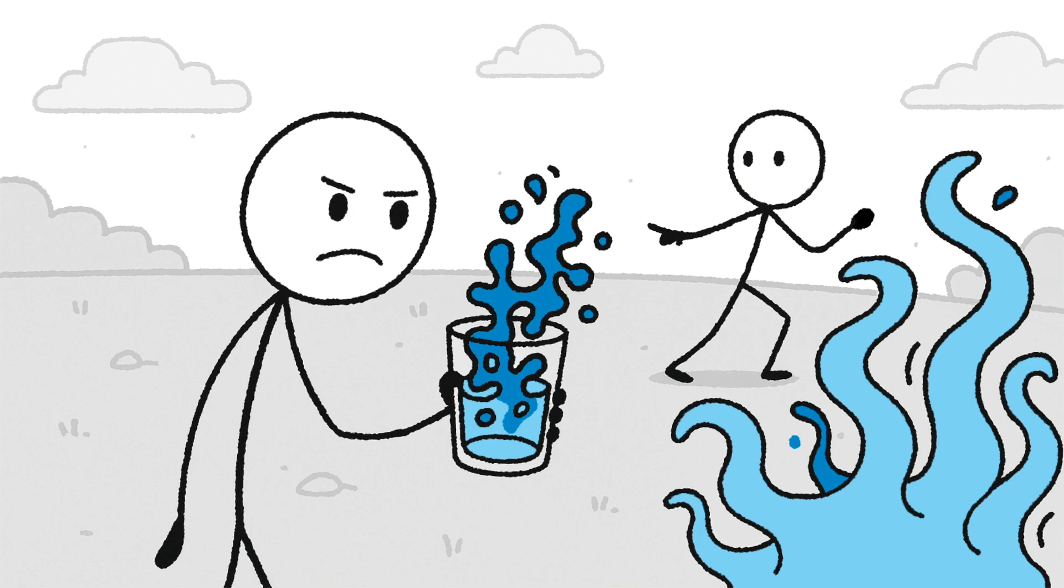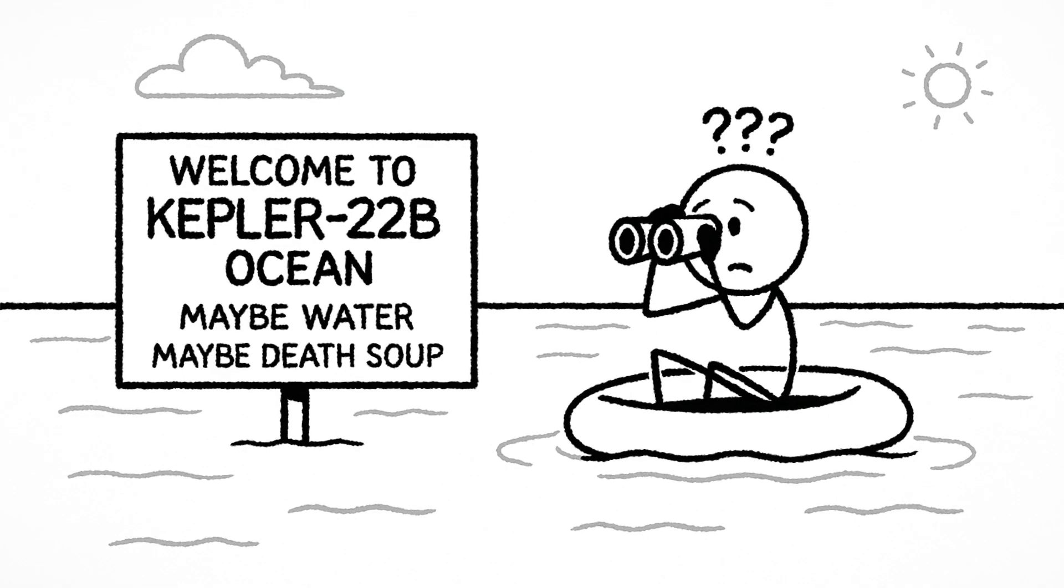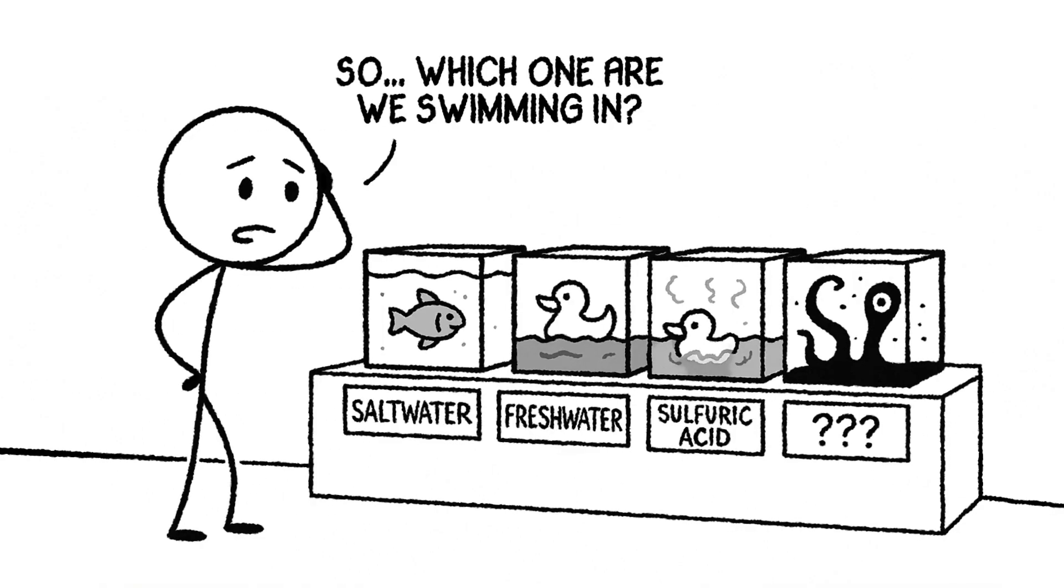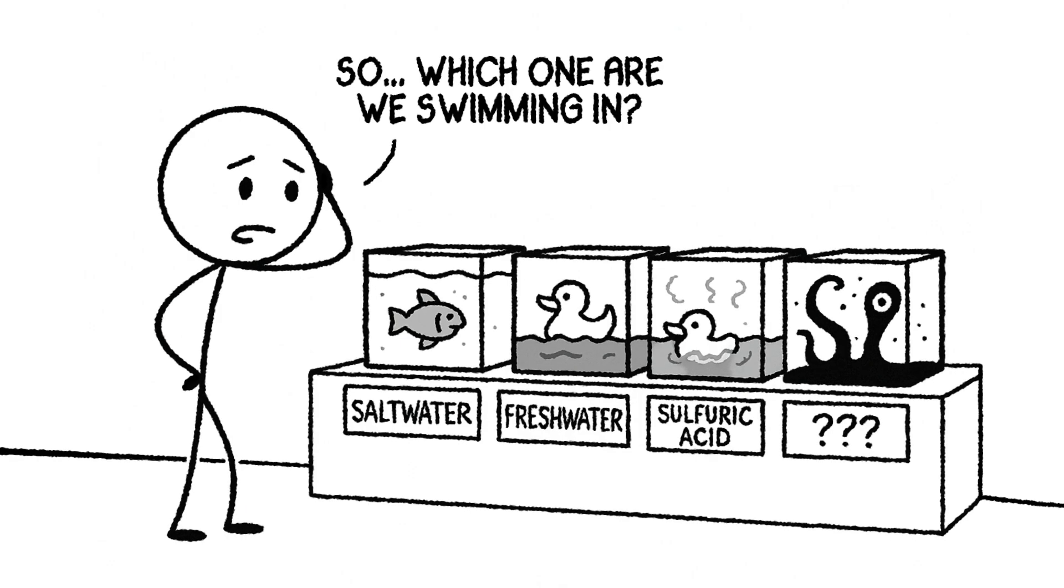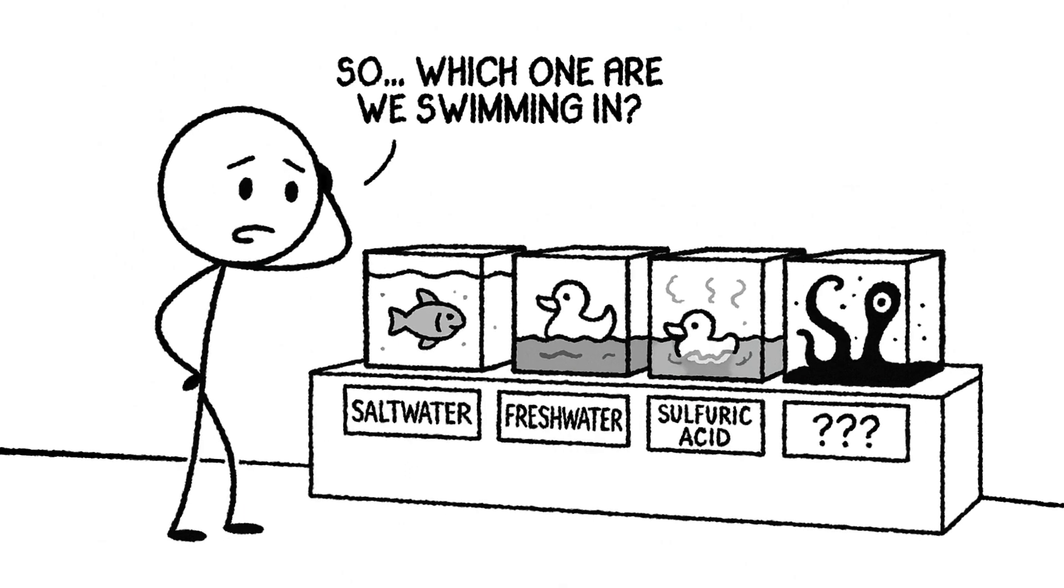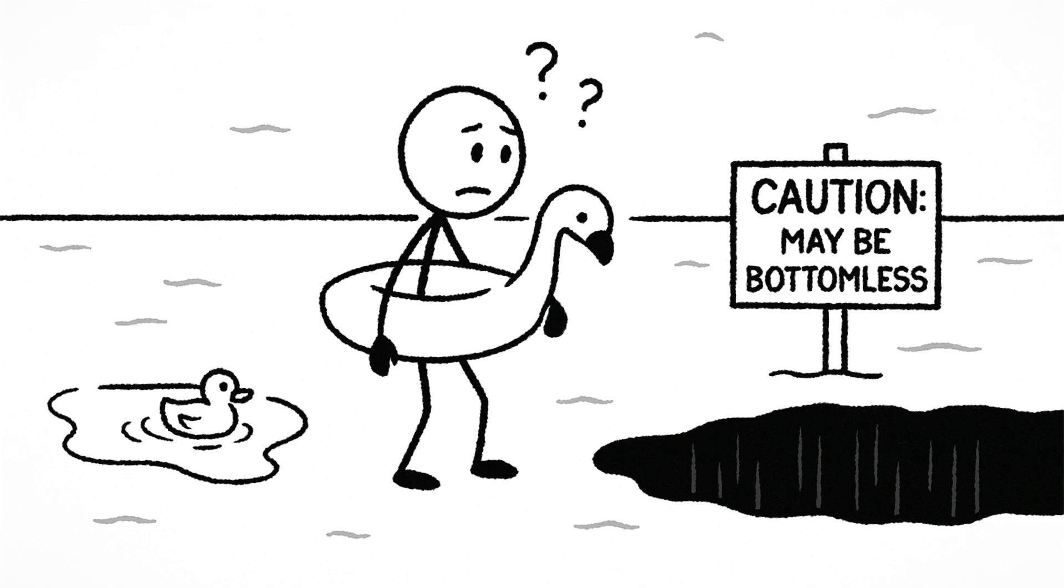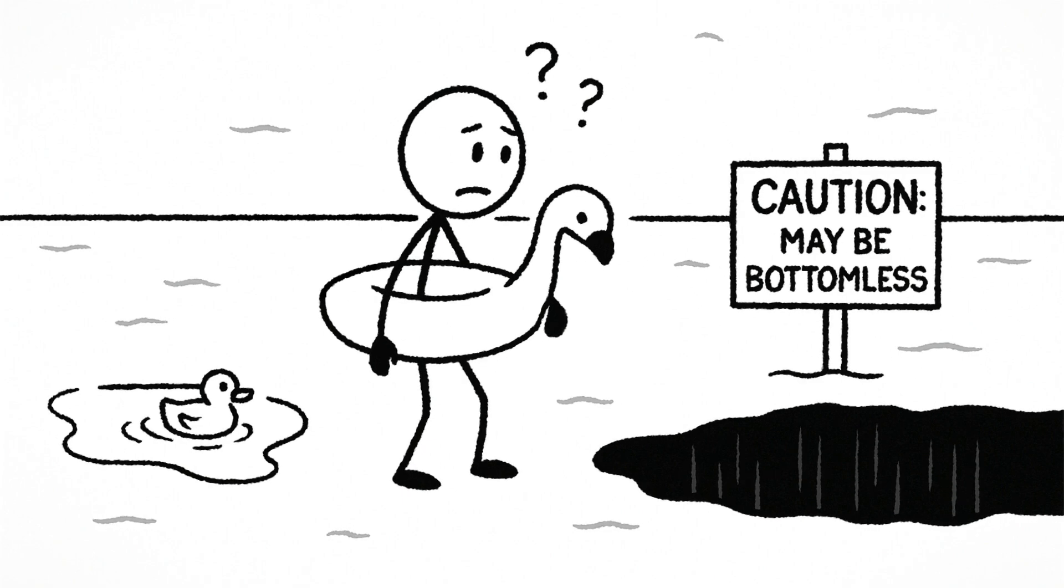Still, Kepler-22b might be mostly ocean-covered. But here's the thing: we don't know what kind of ocean we're dealing with. It could be salt water, fresh water, sulfuric acid, or something so alien it doesn't even have a name yet. And the depth could be a gentle puddle or a bottomless planetary trench. So pack your floaties just in case.